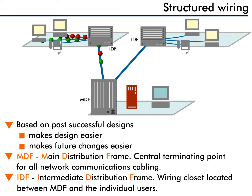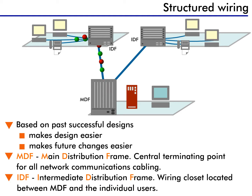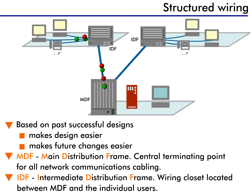Cables extend from the MDF to all the network devices and PCs. In a small building, all wiring may connect directly into the MDF. In larger buildings, or campus environments with multiple buildings, you might see fiber-optic cabling connecting to all the intermediate distribution frames, or IDFs. IDFs are found on each floor, or there might be more than one IDF on one floor if the network is very large. Each of these IDFs connects back to the MDF. In a campus environment with multiple buildings, each building has an MDF that collapses into one central MDF that connects all the buildings together.